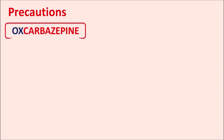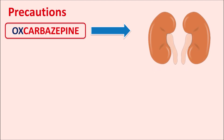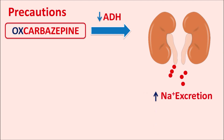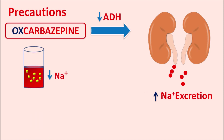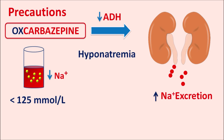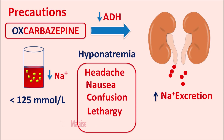One important precaution of oxcarbazepine is its effect on the renal system. This drug can reduce antidiuretic hormone secretion or activity, causing sodium to be excreted rather than retained — resulting in hyponatremia with serum sodium levels below 125 mmol/L. Symptoms include headache, nausea, confusion, lethargy, and malaise, and it can also increase the risk and frequency of seizures. Serum sodium should be closely monitored, especially at higher doses over long periods.